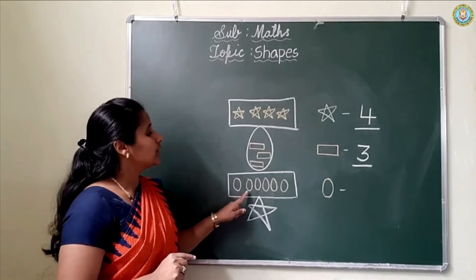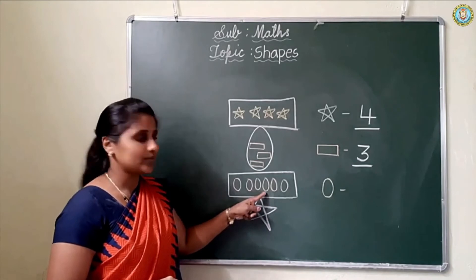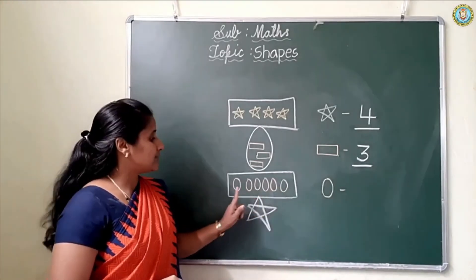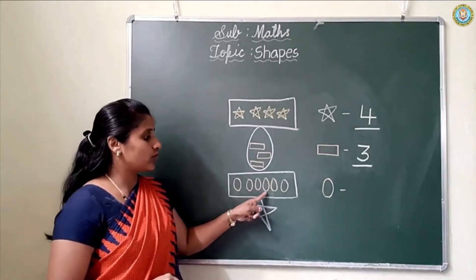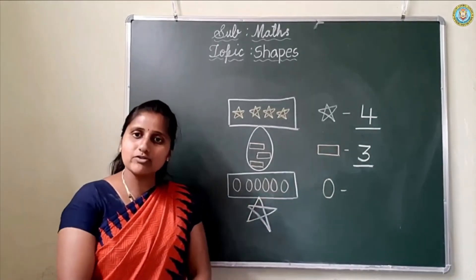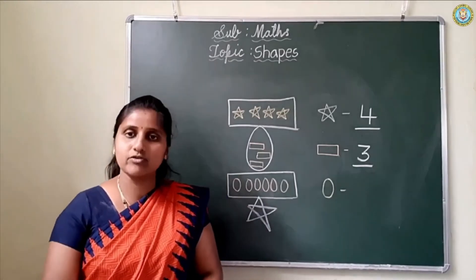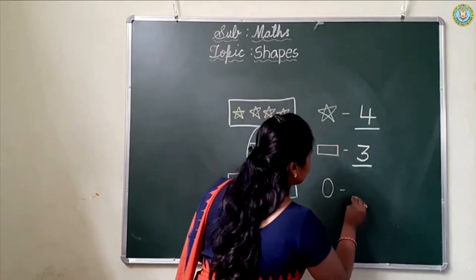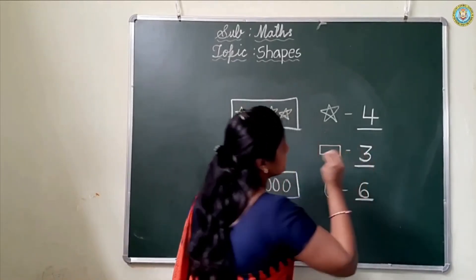Count: 1, 2, 3, 4, 5, 6. Repeat after me: 1, 2, 3, 4, 5, 6. How many ovals are there? There are 6 ovals. How many ovals are there? There are 6 ovals.